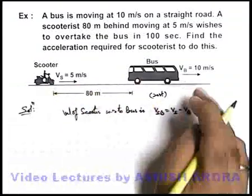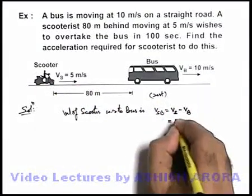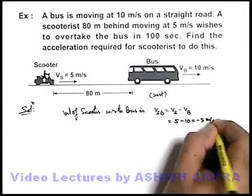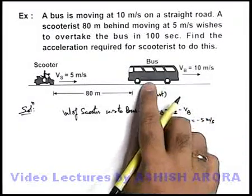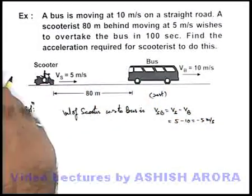We don't need to use vectors because they are in the same direction. So it will be 5 minus 10, that is minus 5 meters per second. Or, as seen from the bus, it appears that the scooter is moving in the backward direction.